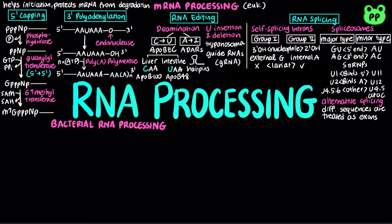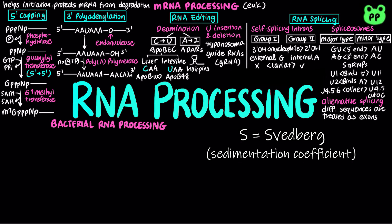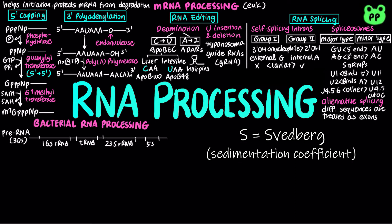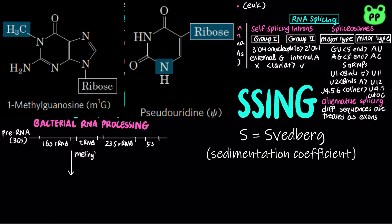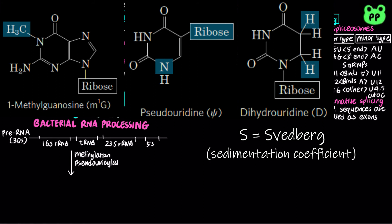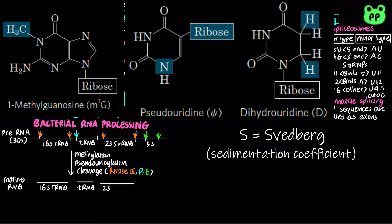RNA transcripts and ribosomes are identified by their S values, which stands for Svedberg values, indicating sedimentation coefficients that refer to the rate of sedimentation in a centrifuge, which are affected by both the shape and mass of the molecule. In bacteria, a single 30S pre-RNA transcript contains precursors to both ribosomal RNA and transfer RNA. 30S pre-RNA is methylated at specific bases. Some uridine residues are converted to pseudouridine or dihydrouridine residues. Ribonuclease 3, or RNase 3, cleaves the 16S and 23S pre-ribosomal RNA. RNase P cleaves pre-tRNA, and RNase E cleaves 5S pre-ribosomal RNA.